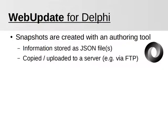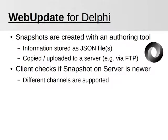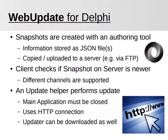The client only needs to check if the snapshot is newer than the local files. The tool supports different channels, like stable, beta, alpha, or nightly, or whatever you come up with. Once the update process is triggered, a helper tool is started which performs the update. This is necessary in order to replace even the application's executable files.